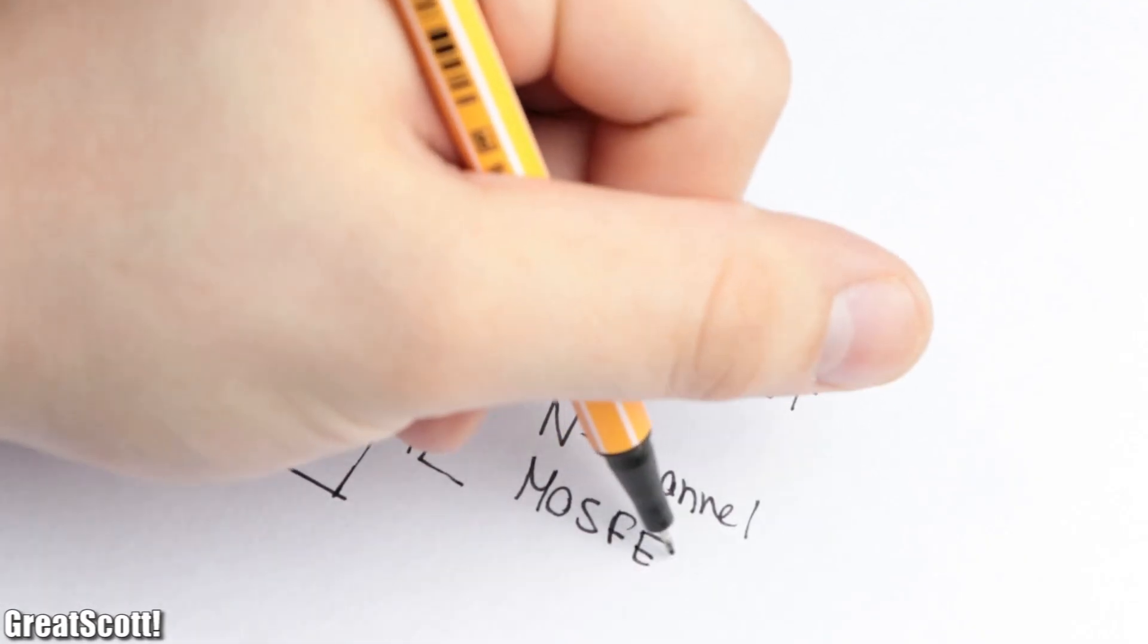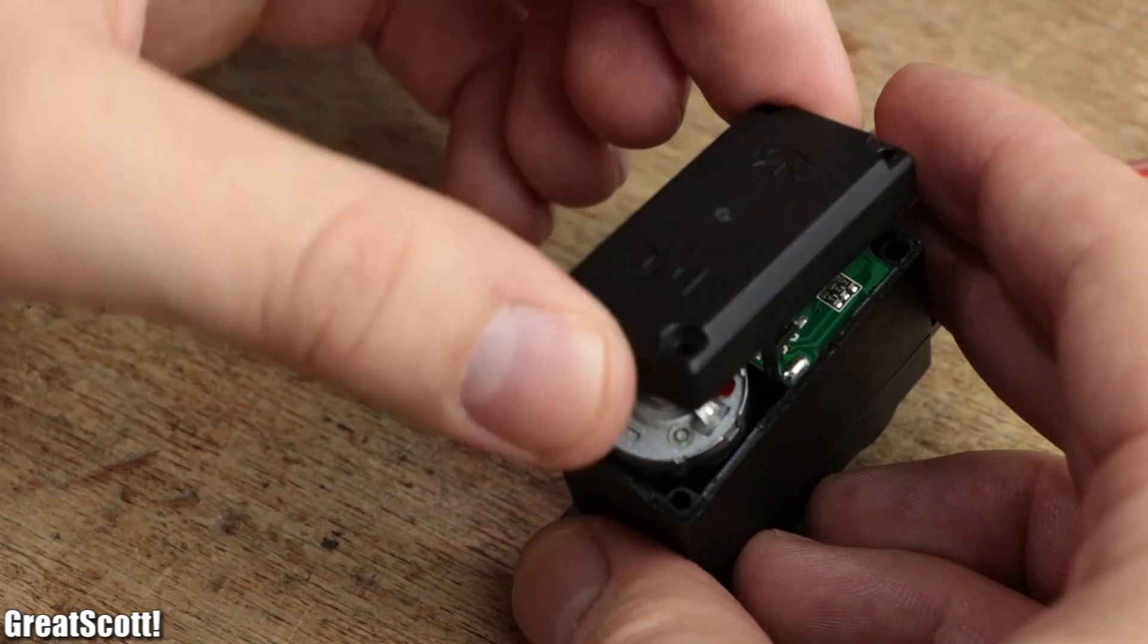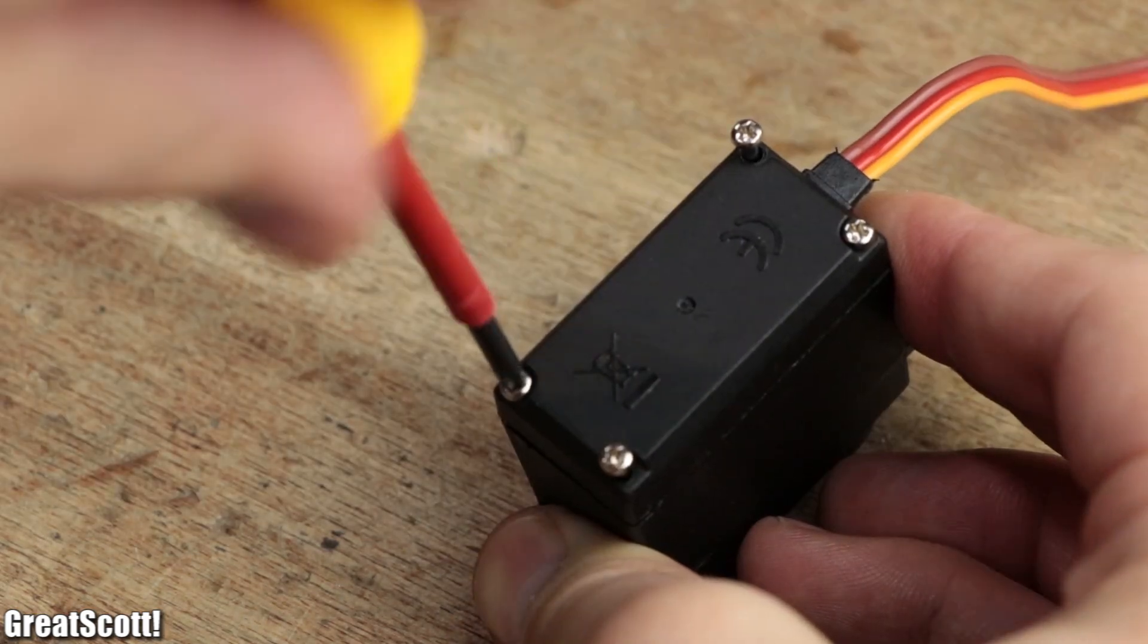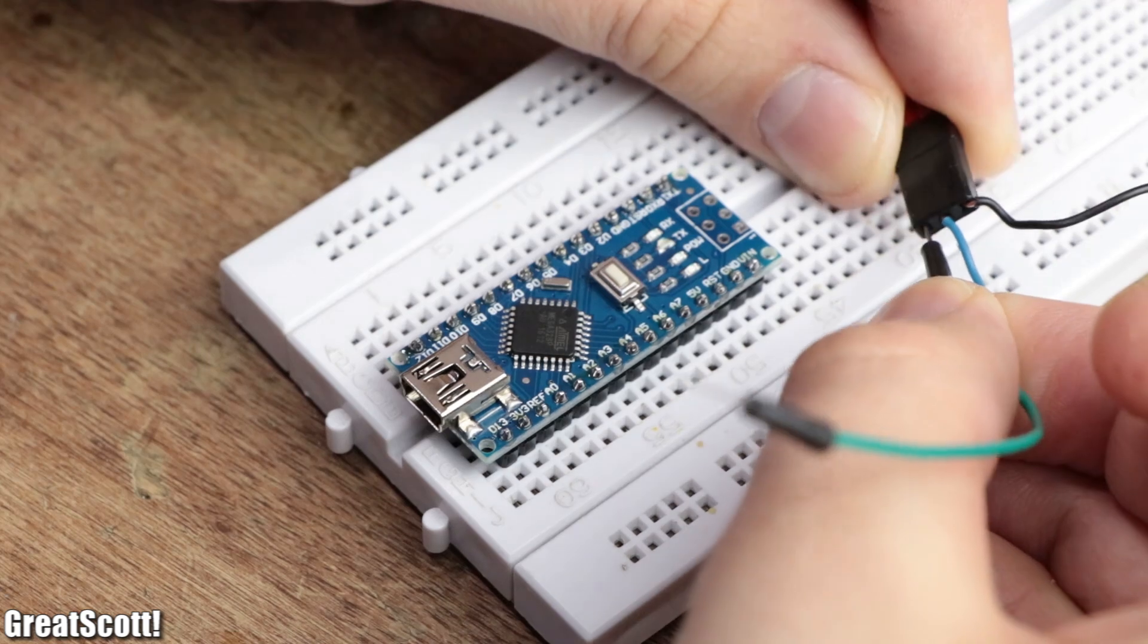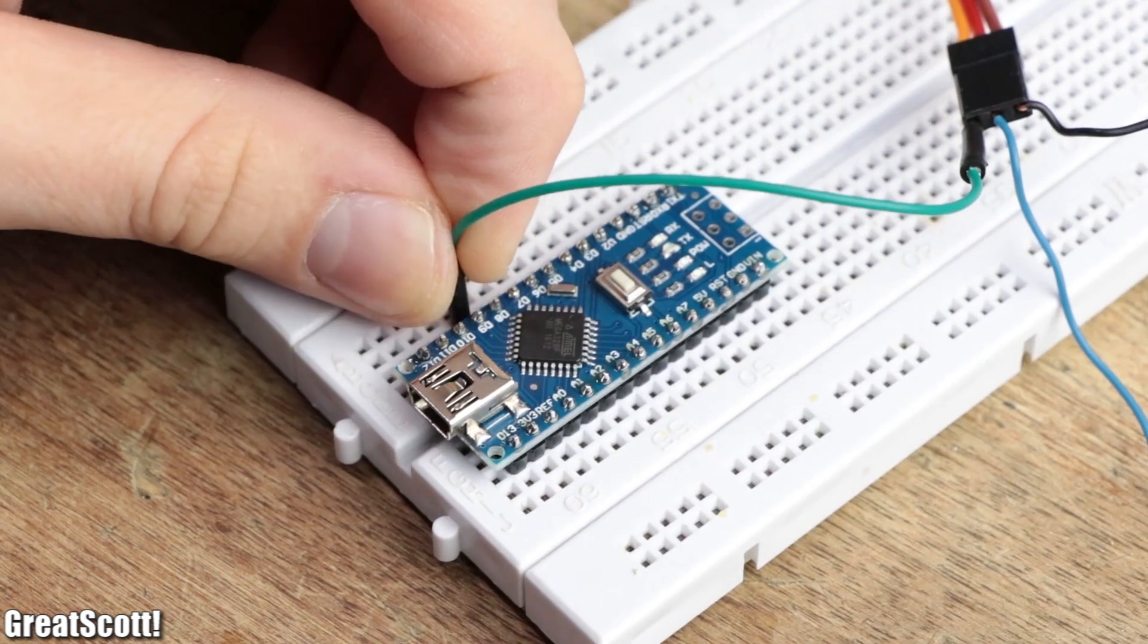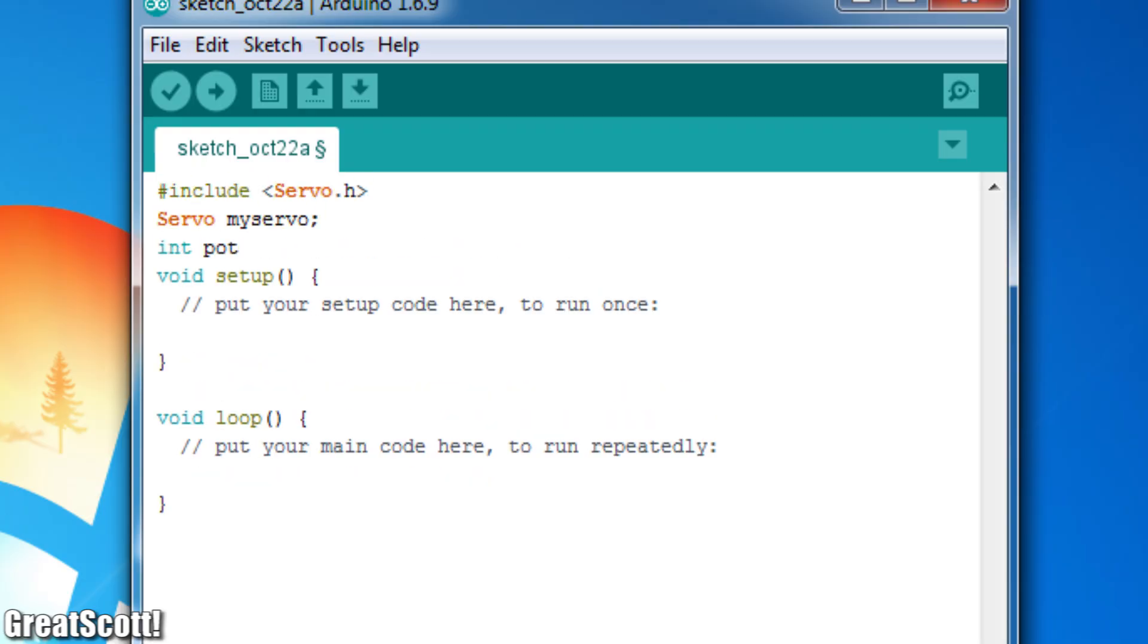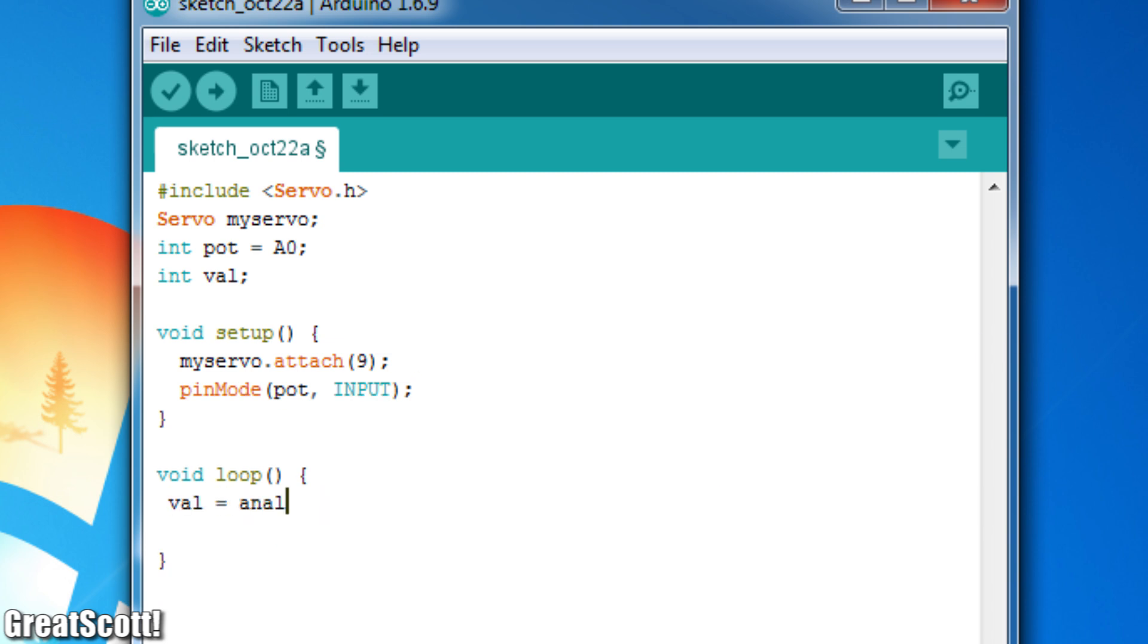But let's get back to the control signal. After connecting the servo to a separate power supply, we can easily use pin 9 of an Arduino and a bit of code that includes the servo library to generate the required signal.